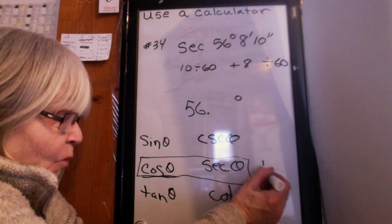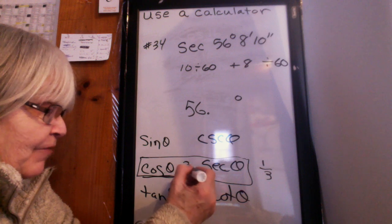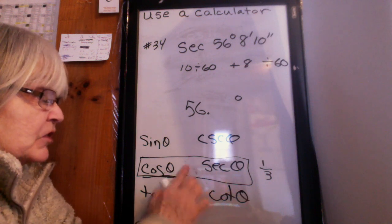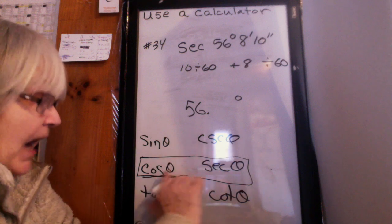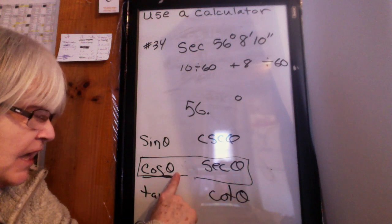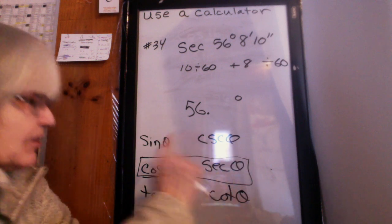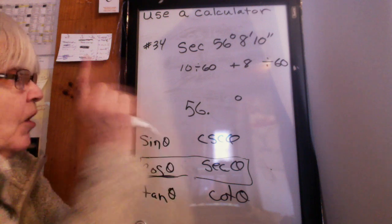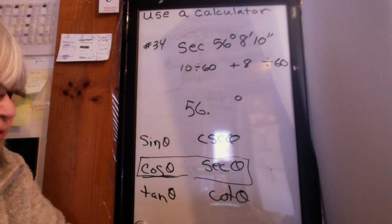So if this was one third, this would be three over one, right? So I can do the cosine. If I want the secant, I do the cosine of that angle, and then I do the reciprocal of it.